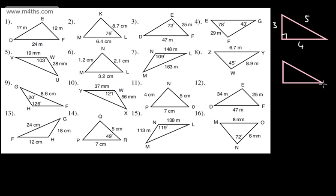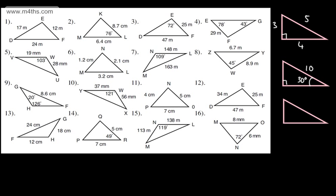We then looked at the trigonometric ratios: sine, cosine, and tangent. We could find a missing length in a right-angle triangle if we had an angle — say 30 degrees — and a known side. So we could use the trigonometric ratios to find a side using sine or cosine. We then looked at finding a missing angle given two sides. If we wanted to find angle x or theta, with sides 8 and 7, we've got the adjacent and the hypotenuse, so we could use cosine to find the missing angle.